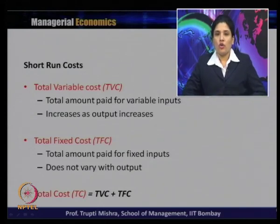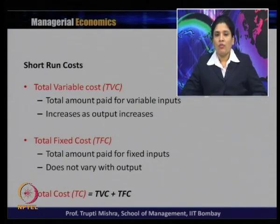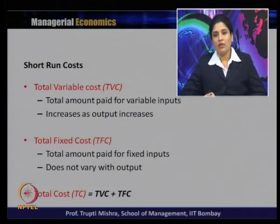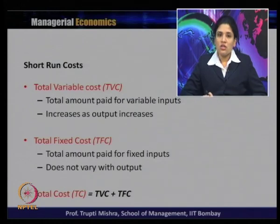In the short run cost, we get total cost which is a combination of total variable cost and total fixed cost. Total variable cost is the total amount paid for variable inputs and it increases as output increases. Total fixed cost is the total amount paid for the fixed input of production — it does not vary with output and is essentially a feature of short run cost analysis. Total cost is the combination of total fixed cost and total variable cost.